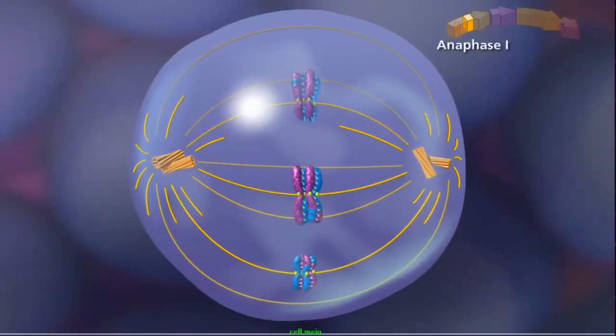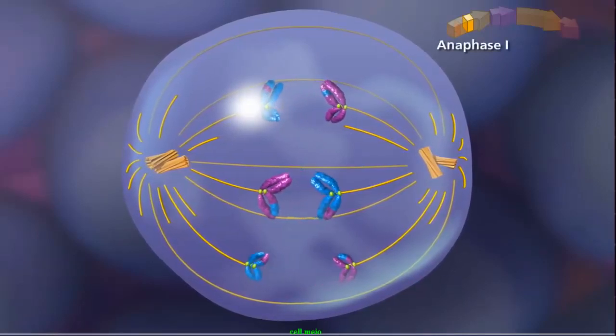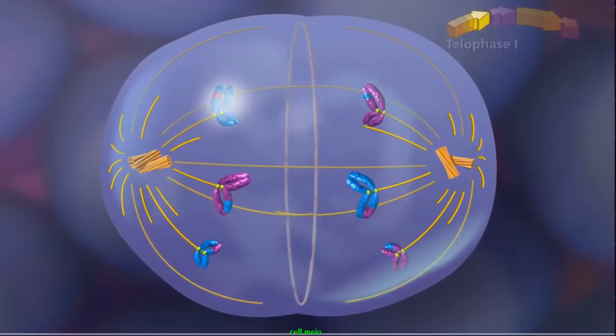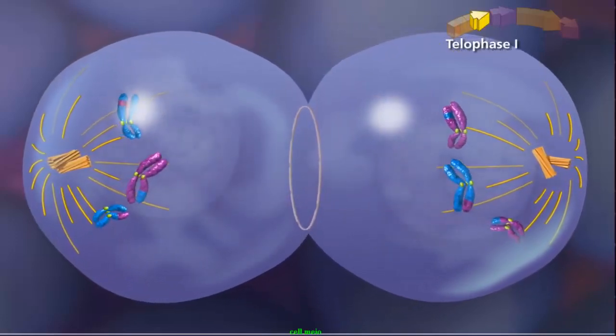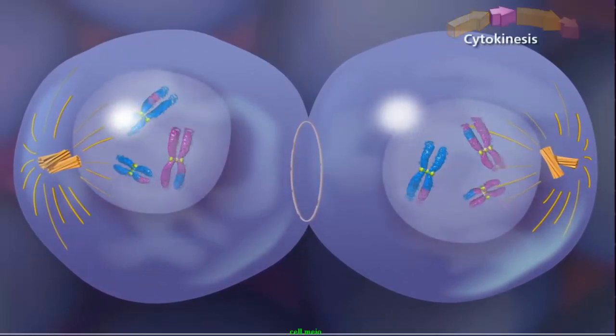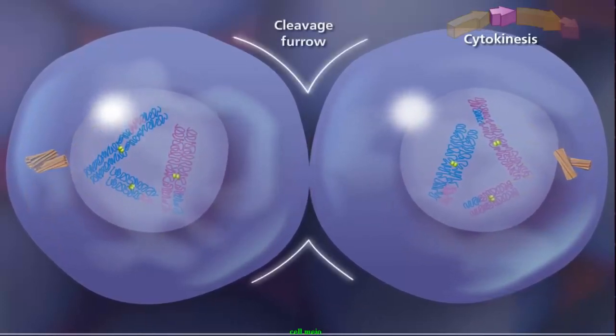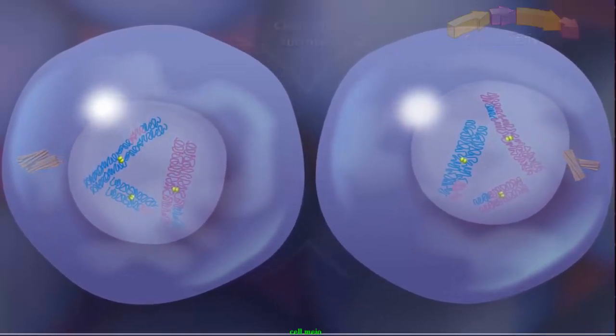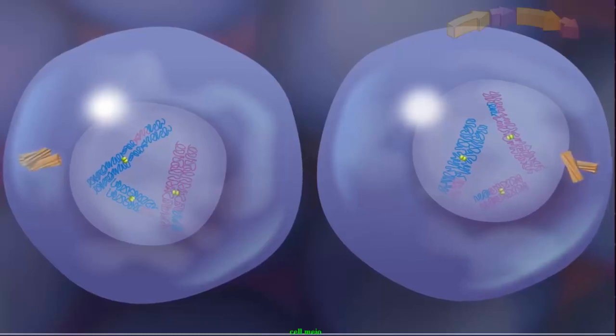In anaphase I, the homologous chromosomes separate and move toward opposite poles. Meiosis I ends with telophase I, when the chromosomes decondense and the nuclear envelope reforms. Cytokinesis separates the cytoplasmic material, and the two daughter cells are separated by a cleavage furrow. Since the final product of meiosis I is two haploid cells, meiosis II begins without the chromosomes going through another round of DNA replication.